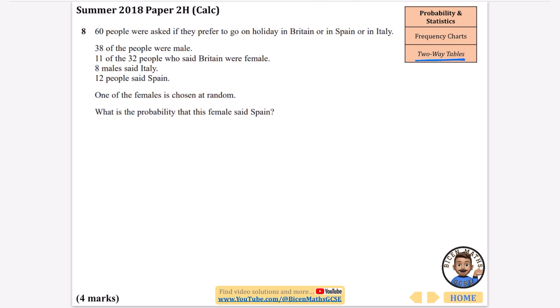What I mean by that is one of the ways of the table, because it's a two-way table, is the holiday destination. So we've got Britain, Spain, or Italy, so I'm going to say Britain, Spain, or Italy, and then at the end we're going to do the total.